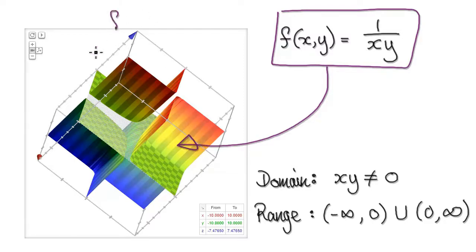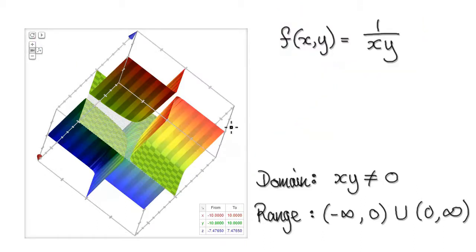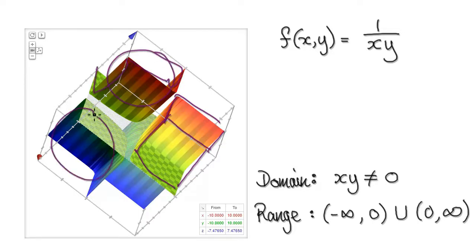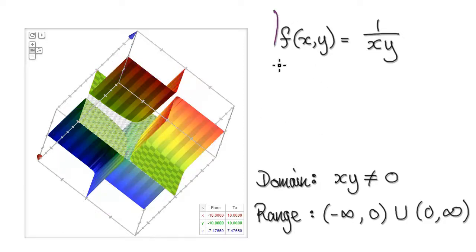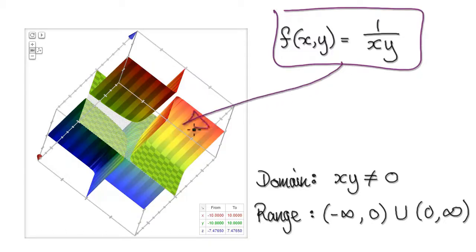When you punch this into Google it will give you the ability to rotate this 3D surface. Here you've got four separate surfaces — you can think of each as like a cube. There are four separate cube-like surfaces, and they are separated from each other.